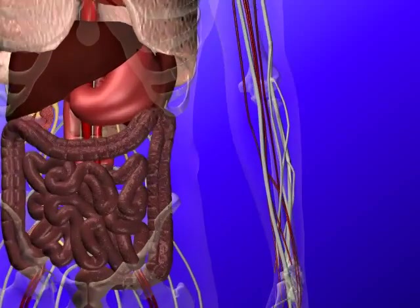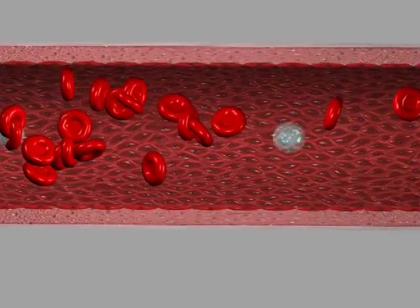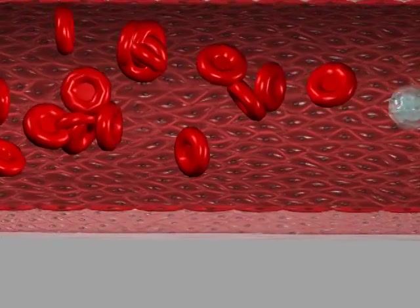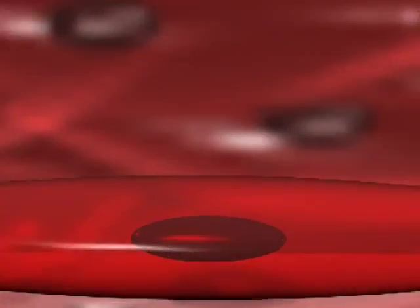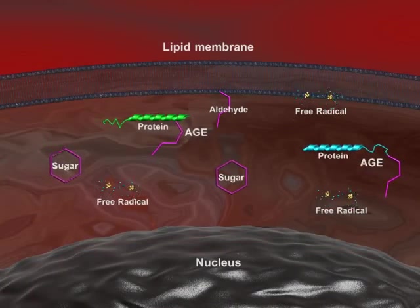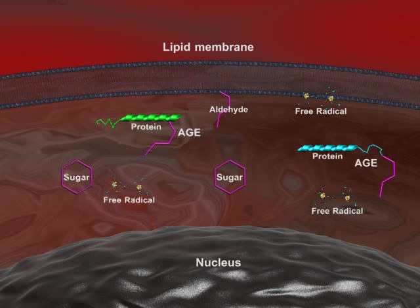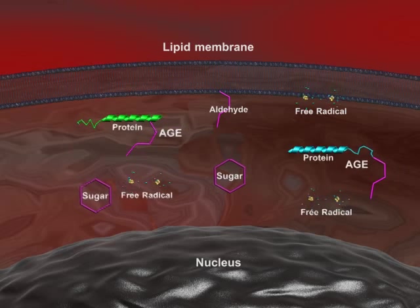AGEs are formed through two distinctive pathways. One is the classic pathway of glycation, or Maillard reaction, and the other is the newly identified oxidative pathway.